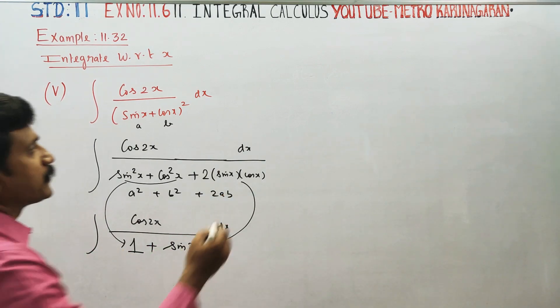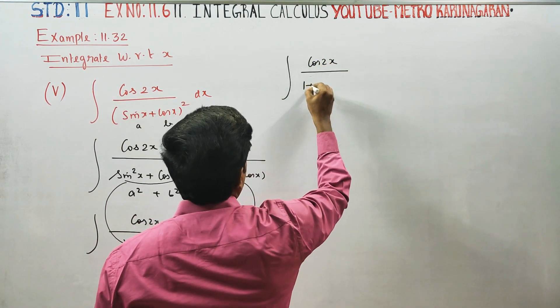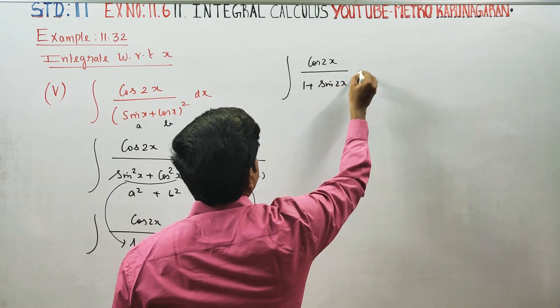Now, the sum becomes cos(2x) divided by (1 + sin(2x)). For this, let's use the substitution method.